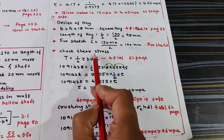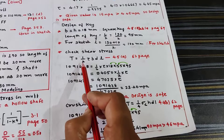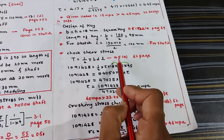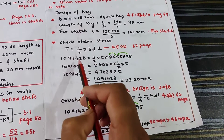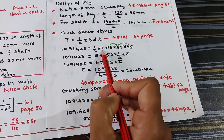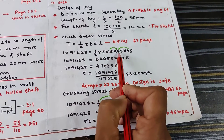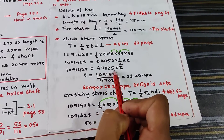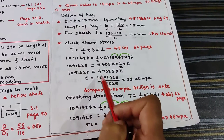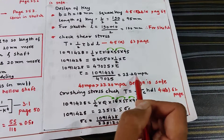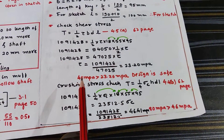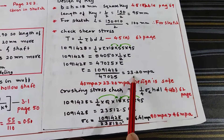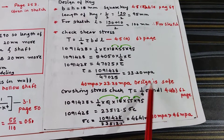Checking shear stress in the key using formula T = (1/2) × τ × B × D × L (equation 4.5, page 62). Substituting values: 1,091,428.5 = 0.5 × τ × 18 × 55 × 95, solving gives an induced shear stress of 23.2 MPa. The allowable shear stress for the key material is 40 MPa, and since 23.2 MPa < 40 MPa, the design is safe.